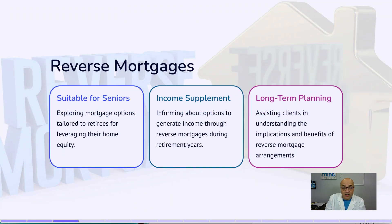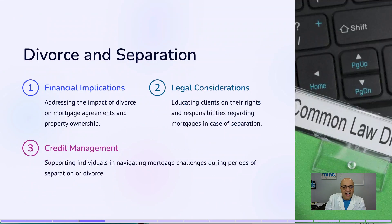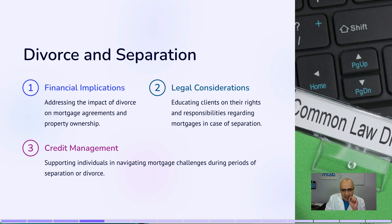Number two: reverse mortgages, which is very important. This is one of the best equity programs out there. Number three: divorce and separation. Unfortunately, about 50% of people end up in divorce, and when they have a home they have to deal with this. Mortgage agents or brokers who really know the process on this are going to do really well.